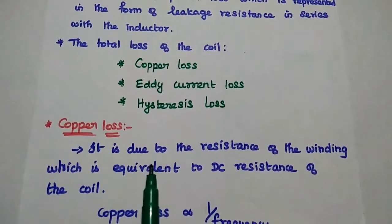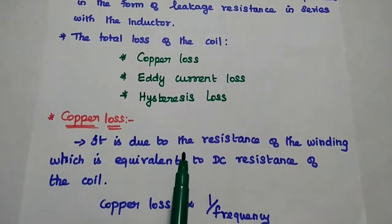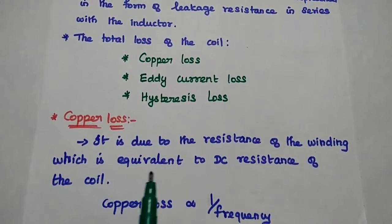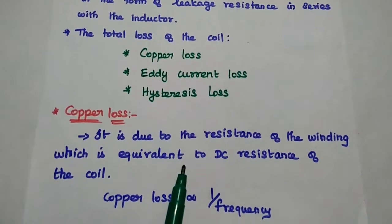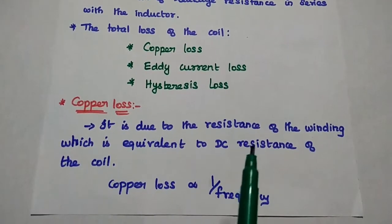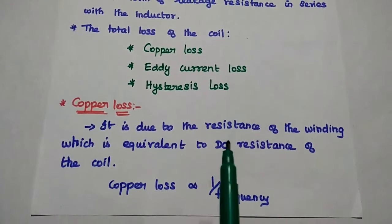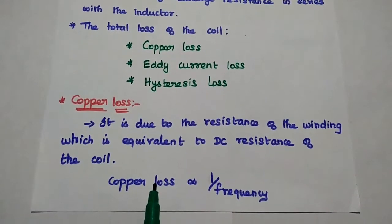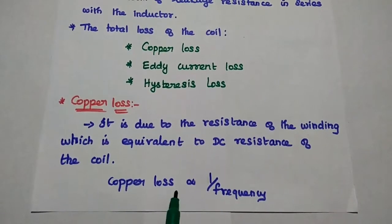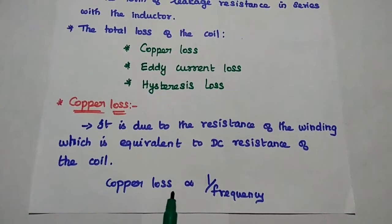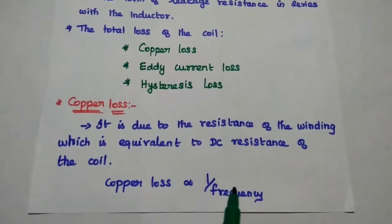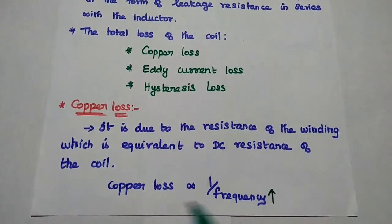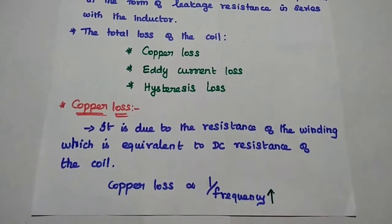Copper loss, it is due to the resistance of the winding which is equivalent to the DC resistance. So here the coil is made up of windings. Due to the resistance of the windings in the coil, there may be some losses. It is represented as copper loss. This loss is inversely proportional to the frequency. If frequency increases, then the copper loss is getting decreased.